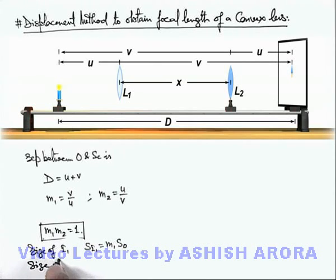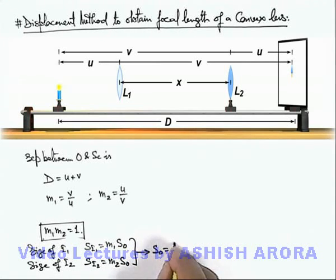And if we calculate size of image 2, which is the image size when lens is in position 2, then size of image 2 is m2 multiplied by size of object. So from these 2 relations we can see that size of object is equal to the geometric mean of size of image 1 and size of image 2. You must always keep it in mind, this is also quite useful whenever you are required to calculate the size of object by measurement of image sizes.